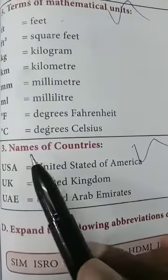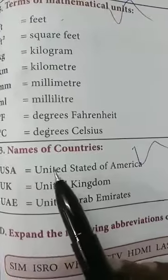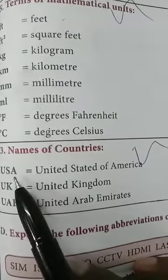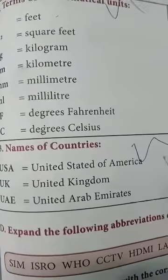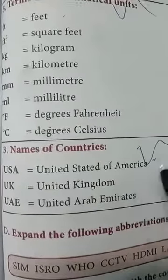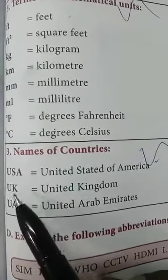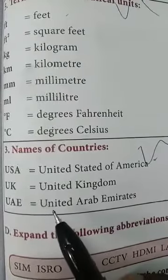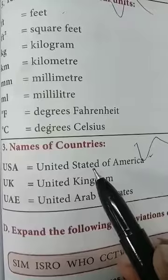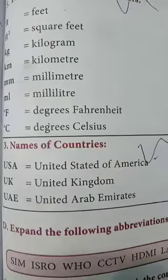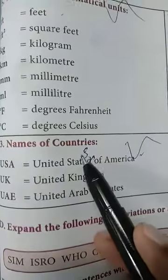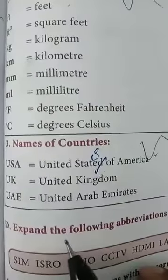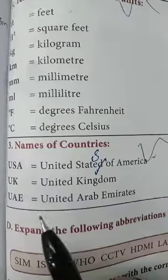Names of countries: USA stands for United States of America — both the full form and abbreviation are correct and the same. UK stands for United Kingdom. UAE stands for United Arab Emirates.